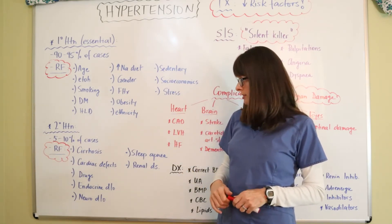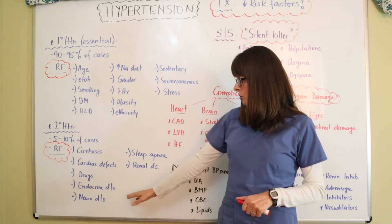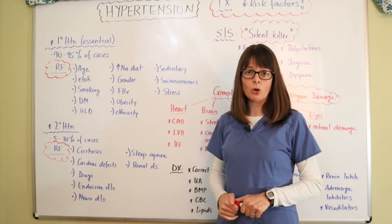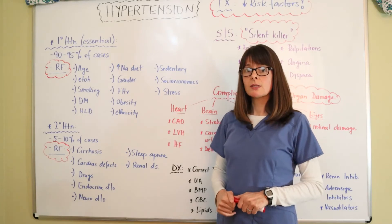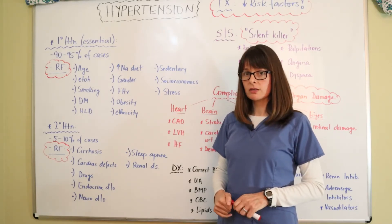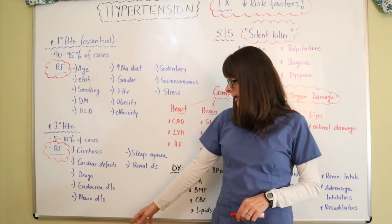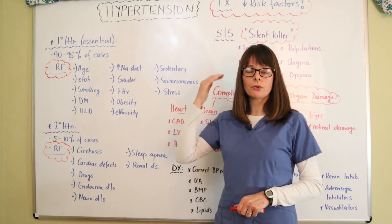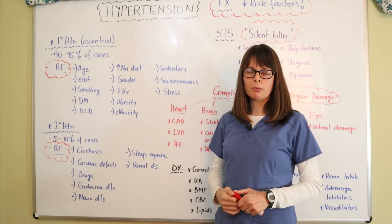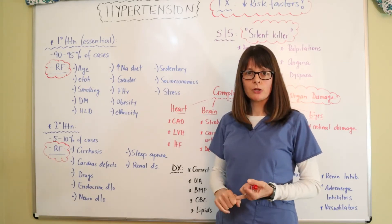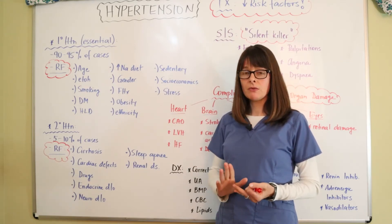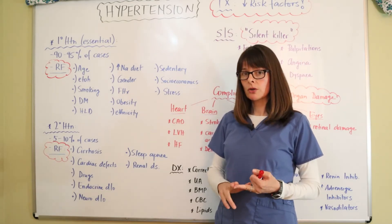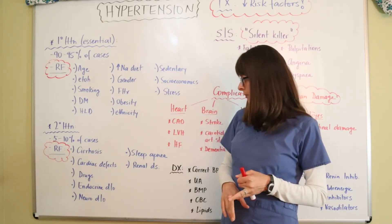Certain endocrine disorders such as pheochromocytoma, Cushing's disease, and thyroid disease can cause secondary hypertension. Neurologic disorders — anything that disrupts the cerebral autoregulation of blood pressure, such as traumatic brain injury or ischemia from a stroke — can definitely cause secondary hypertension.